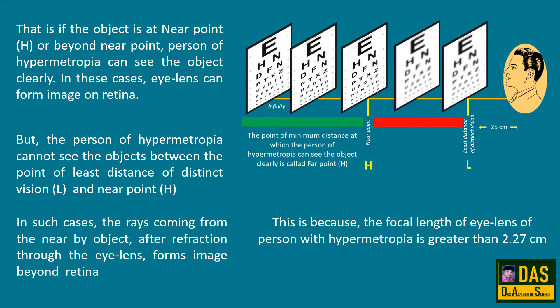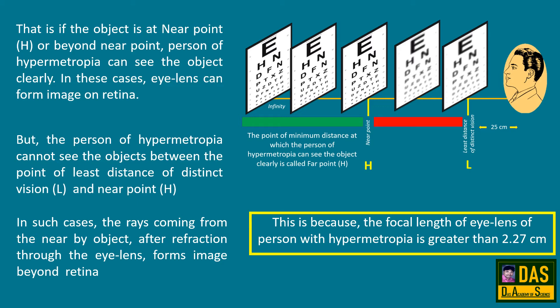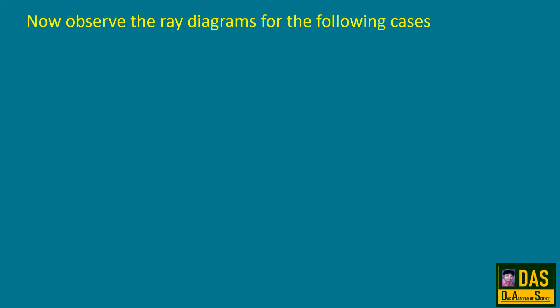The rays coming from a nearby object, after refraction through the eye lens, form an image beyond the retina. This is because the focal length of the eye lens of a person with hypermetropia is greater than 2.27 cm. Now observe the ray diagrams for the following cases.